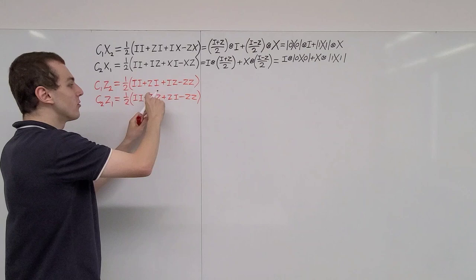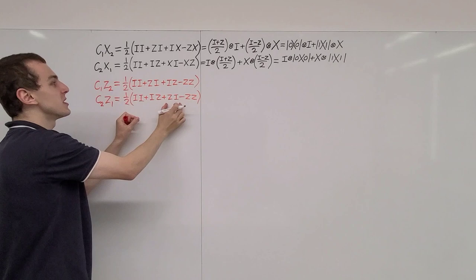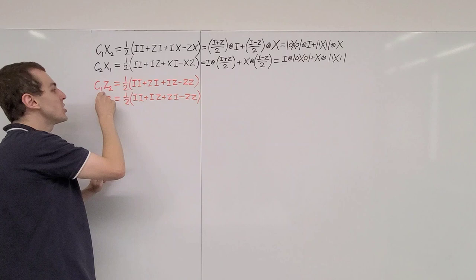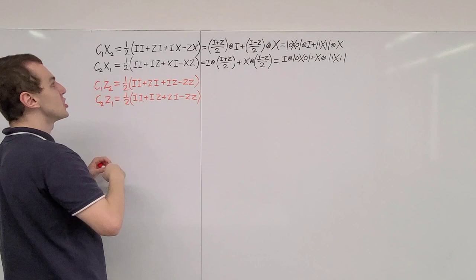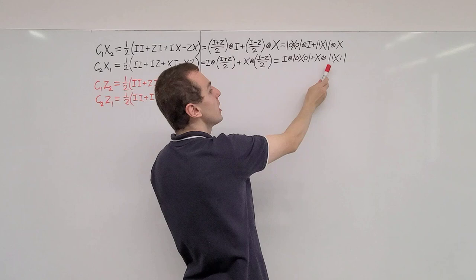Notice that the II and ZZ terms are unaffected when we swap qubits, because the same matrix appears on both sides of the tensor product. But ZI turns into IZ and IZ turns into ZI. Since we're taking the sum of these terms and matrix addition is commutative, the two forms are equivalent. Therefore there is no need to specify which qubit is the control and which is the target for the controlled Z gate — unlike the controlled NOT gate where the distinction does matter.